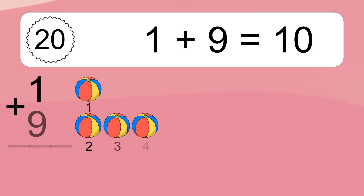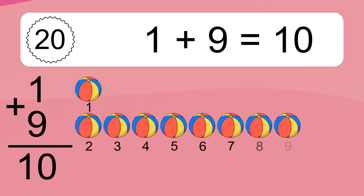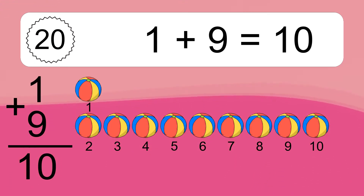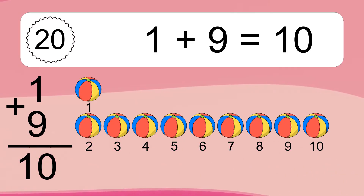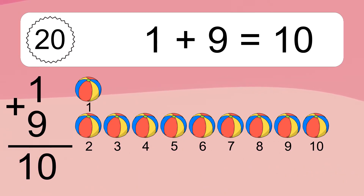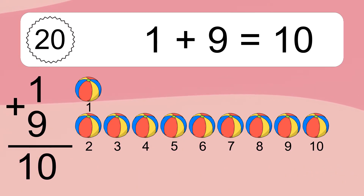One plus nine equals what? One plus nine equals ten. Let's count it: one, two, three, four, five, six, seven, eight, nine, ten.